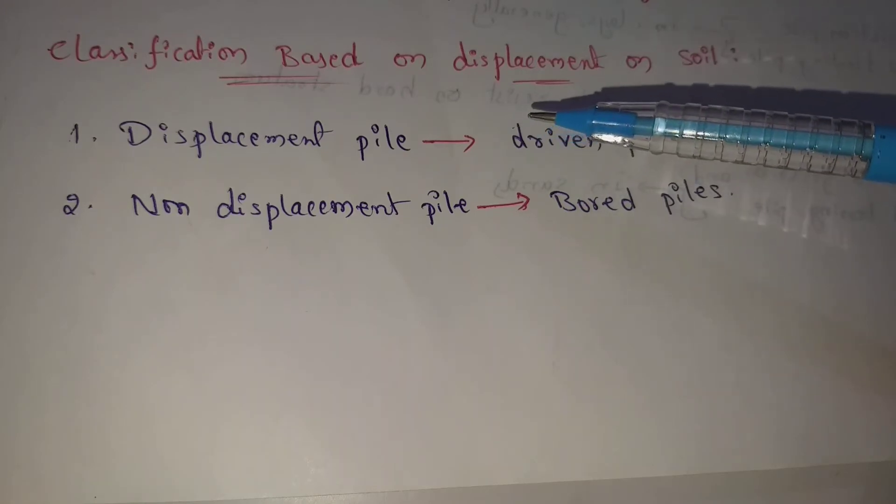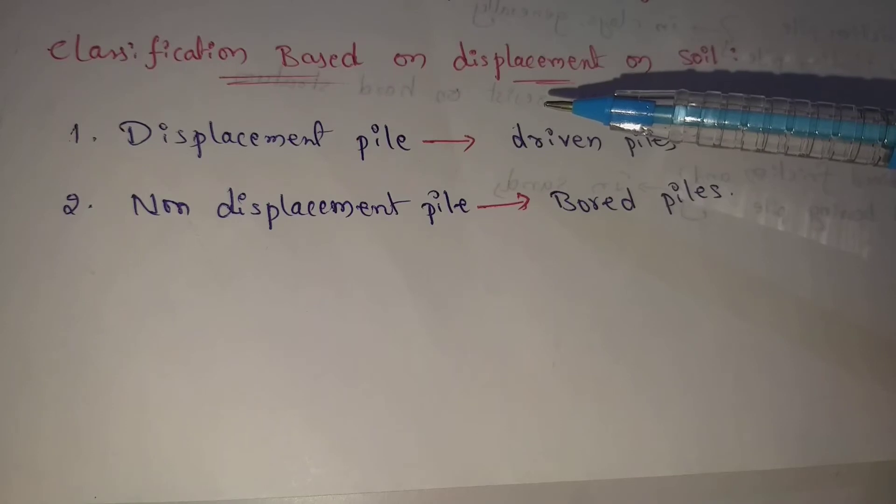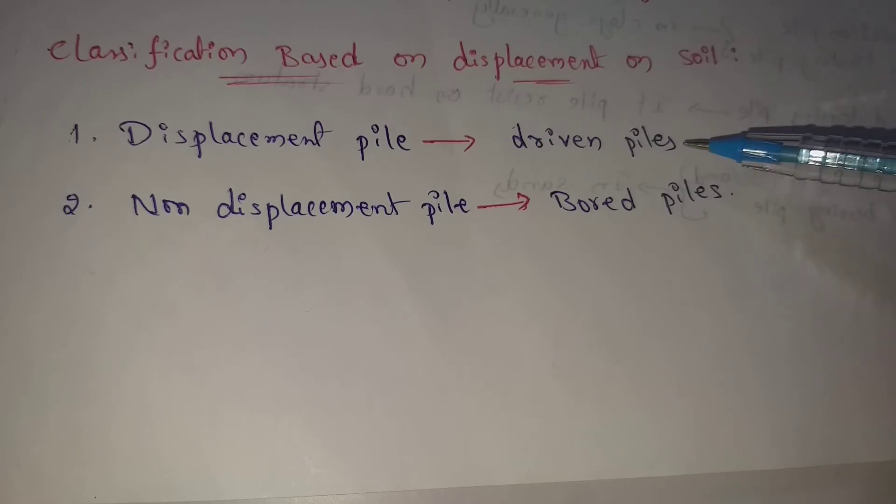First, displacement piles: the piles which cause lateral displacement of soil when installed. When we install these piles, we will have lateral displacement in the soil. That is displacement piles. For example, all driven piles. These driven piles are displacement piles.